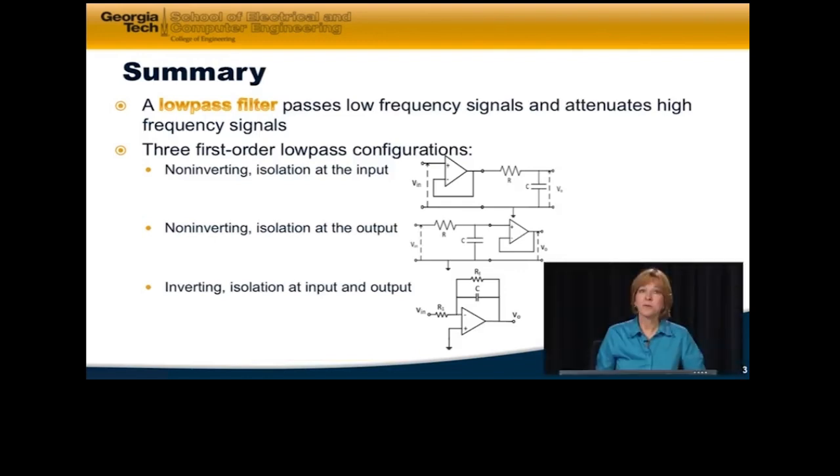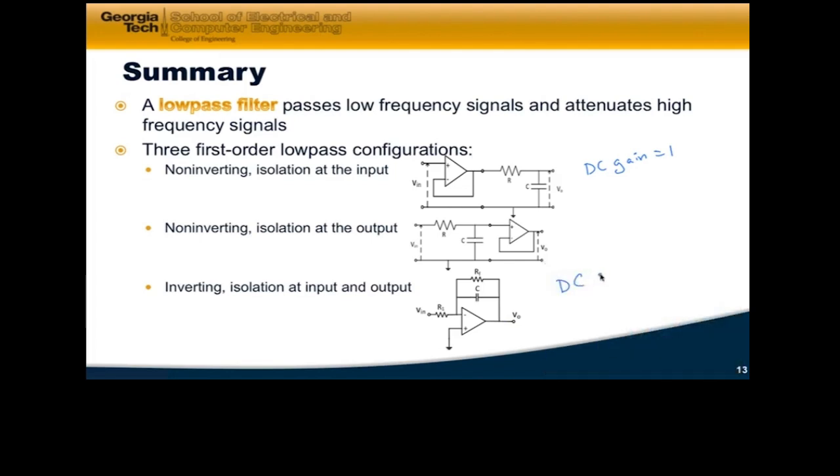So in summary, a low pass filter passes low frequency signals and attenuates high frequency signals. We looked at three first order low pass configurations. Two of them were made up by just taking a passive low pass filter and putting a buffer circuit on it, either at the input or at the output to provide isolation wherever we want. Now these particular circuits provided a DC gain equal to 1 and they were not inverting. So in this particular case, we have an inverting amplifier. It provides isolation at both the input and the output. And it also has a DC gain that is not 1, so it can actually amplify our signal. Minus RF over R1.